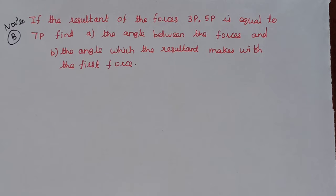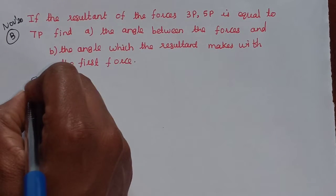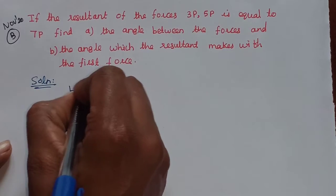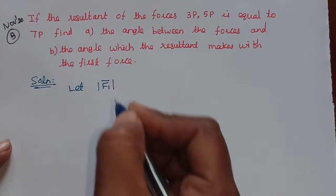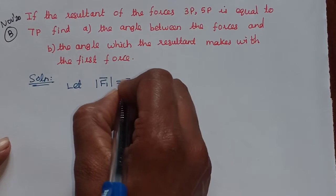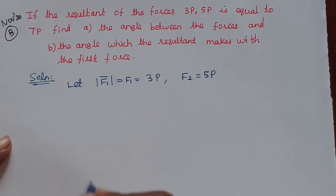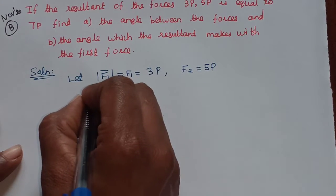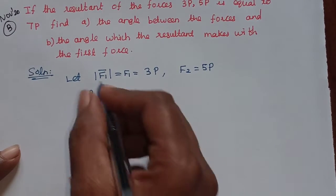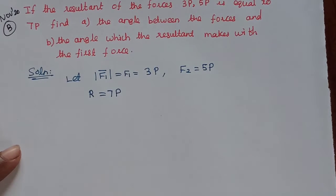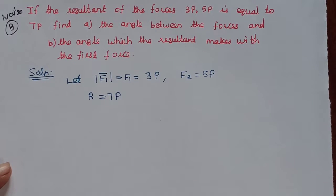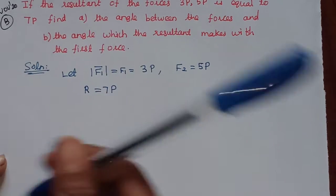If the resultant of forces 3p and 5p is equal to 7p, we are given the resultant of forces 3p and 5p in vector form. The magnitude of the two forces is given. In the solution, let F1 — the magnitude of F1 vector — be 3p, and the resultant R vector has magnitude 7p. What force F2 is given? Its magnitude is the first thing asked: the angle between the forces.